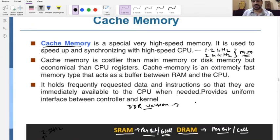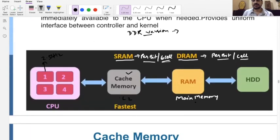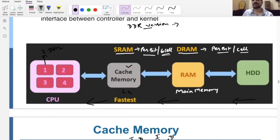All these memory levels are required to send data from the hard drive to the RAM, then to cache memory, and ultimately to the CPU, because every piece of data must be processed in the CPU. The result will then go back down through that particular hierarchy of memory.